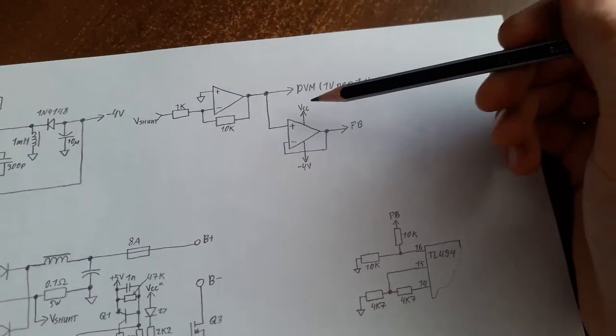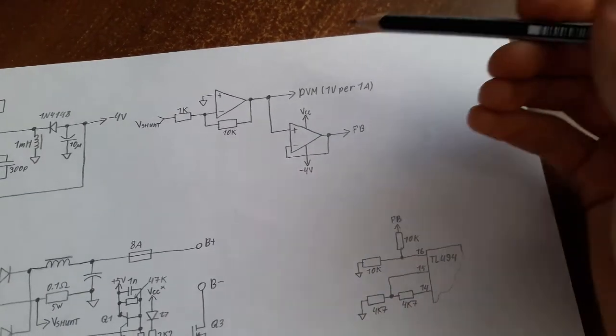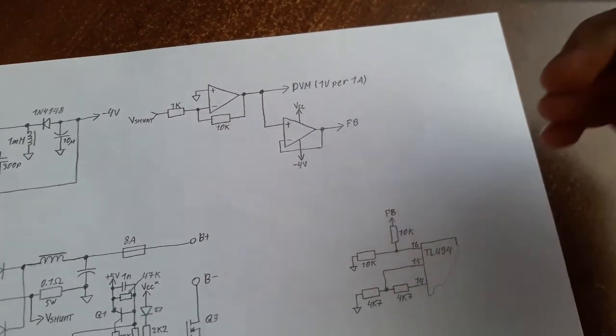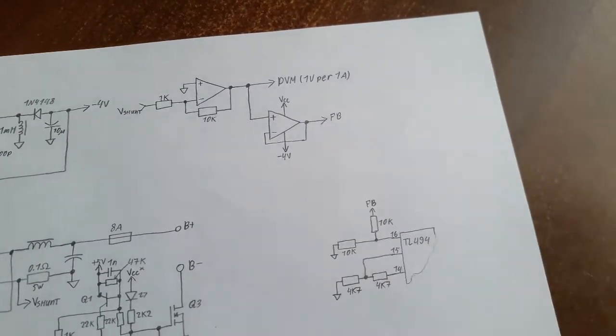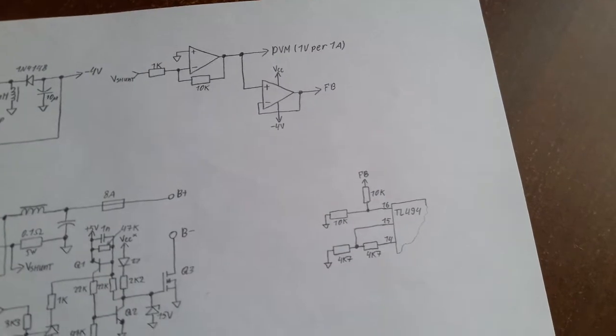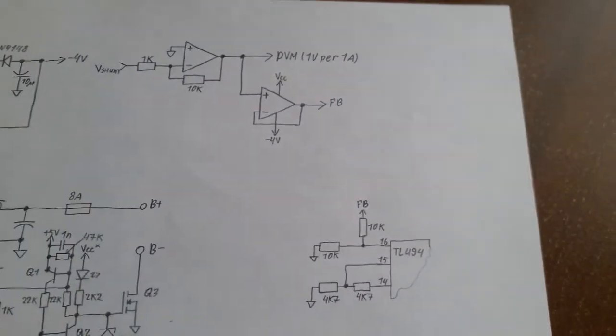Then you have a little buffer that goes into the feedback point. Now, I could have drawn the divider right here, but that's a bad idea. Because in the actual layout, I've done it a little bit differently. Here you can see the chunk of TL494, pin 16.